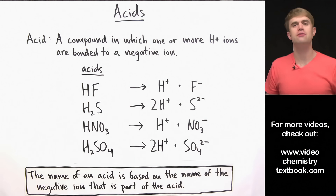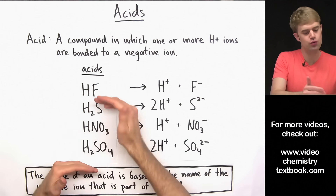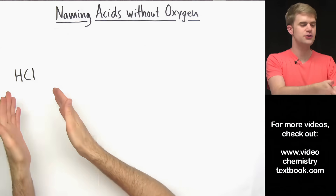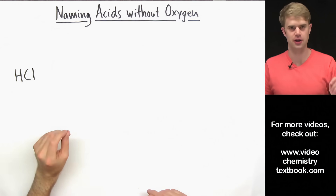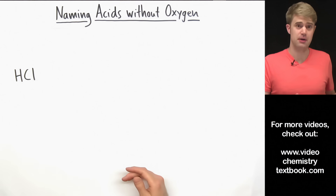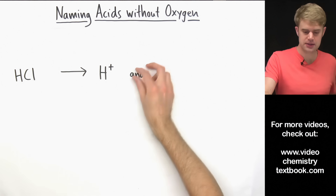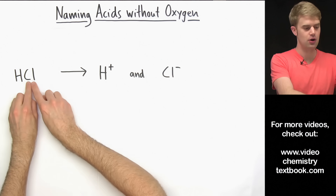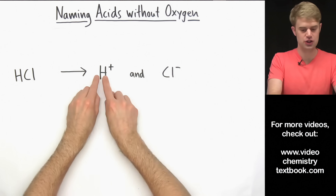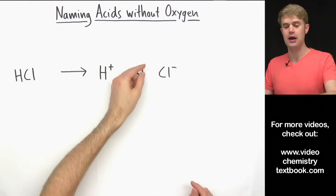There are really two types of acids: ones that have oxygen and ones that don't. There are different rules for how we name them, so let's start with acids that don't have oxygen. Our first example is HCl — definitely no oxygen here. The first thing I want to do is break this up into the two ions it's made of. One is obviously H+ because it's an acid, and the second ion is Cl-.